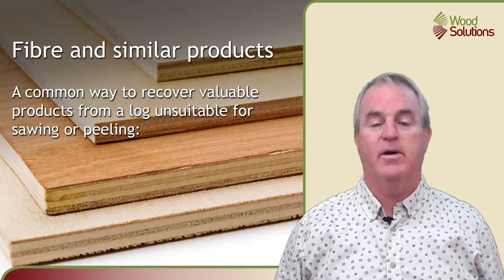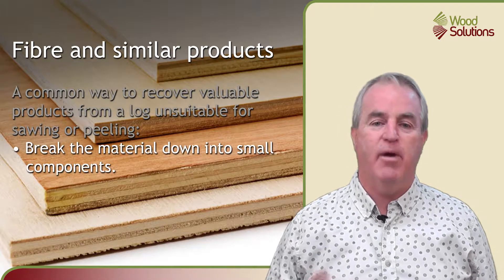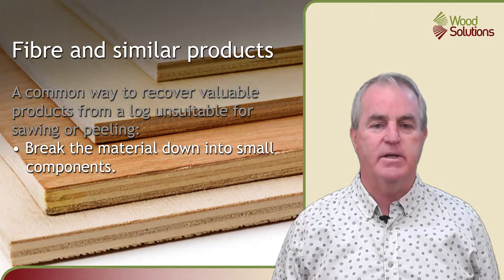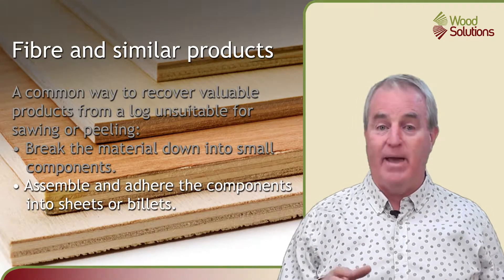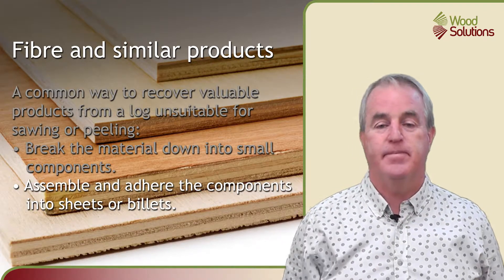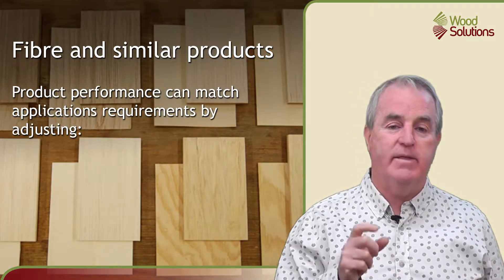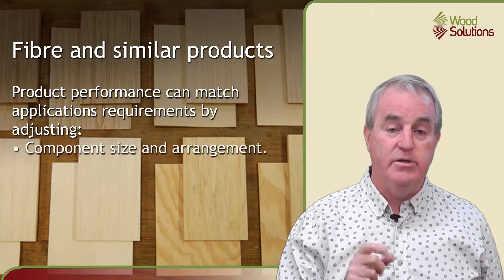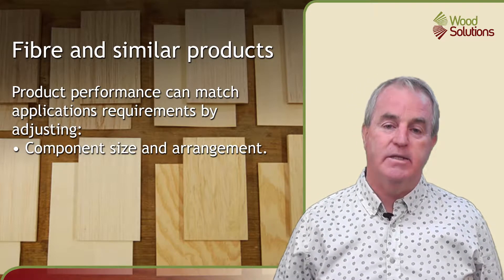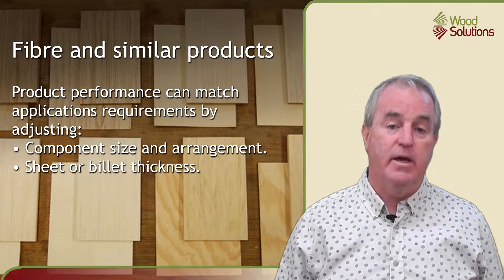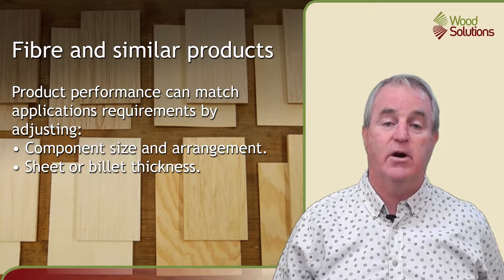A common way to recover valuable products from logs or parts of logs that are unsuitable for sawing or peeling is to break the material down into small components such as particles, flakes or fibre, and then glue these small pieces together into a panel or into a billet. The product's performance can be tailored for specific applications by manipulating the size of the wood components used, their arrangement, and the thickness of the panel or billet. Sheets and similar panel materials can be used immediately, while large billets are often re-sawn into sizes suitable for building.